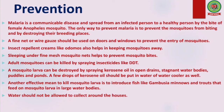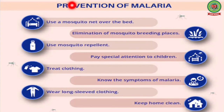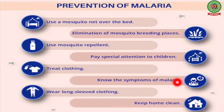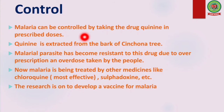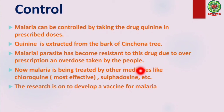Another effective method to kill mosquito larvae is to introduce fish like Gambusia, minnows, and trout that feed on mosquito larvae in large water bodies. Above all, we should not allow stagnant water around our houses, as it is a breeding place for female Anopheles mosquitoes. Malaria can be controlled by taking the drug quinine in prescribed doses. Quinine is extracted from the bark of the cinchona tree. The malarial parasite has become resistant to this drug due to overprescription, so nowadays malaria is being treated by other medicines like chloroquine and sulfadoxine. Research is ongoing to develop a vaccine for malaria.